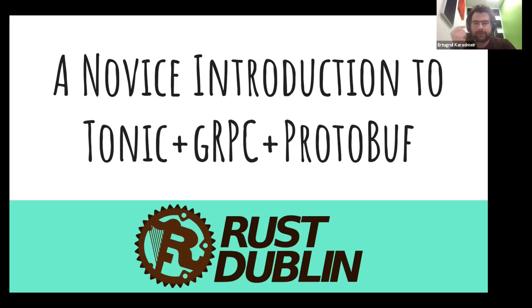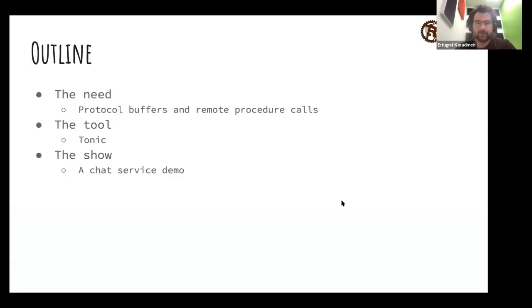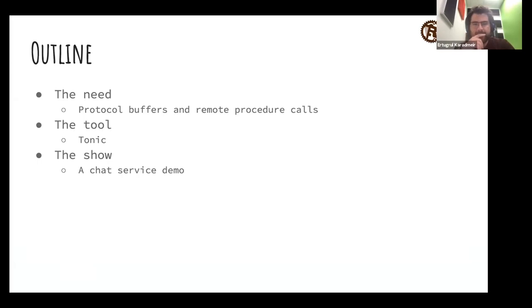Today the topic is about Tonic, gRPC, and Protocol Buffers, but I'm not going to touch any of them in detail — I just want to share my experiences, hopefully helpful to anyone who is going to use these tools. I'm going to implement a chat service, which is a very bad chat service, but my aim is just to learn how Tonic works.